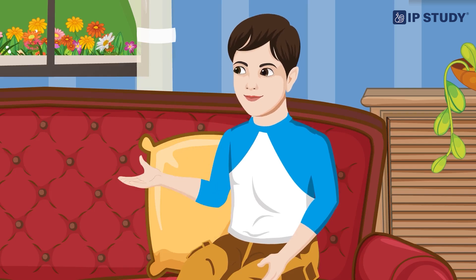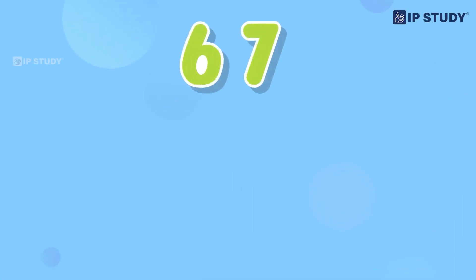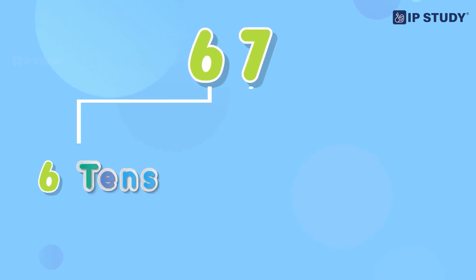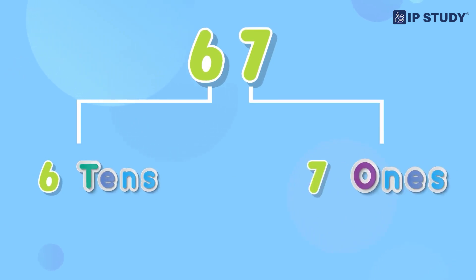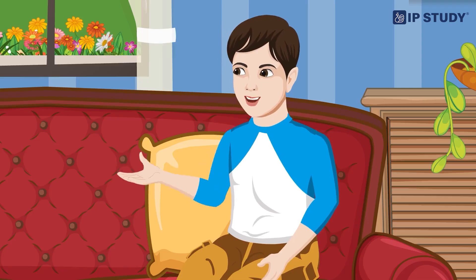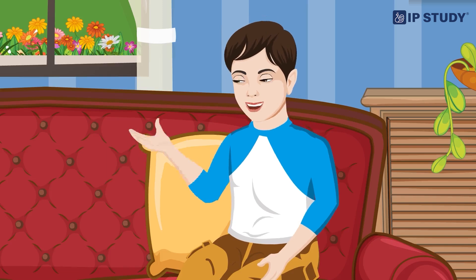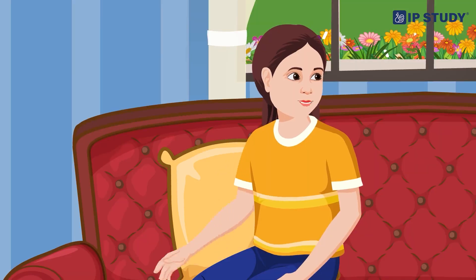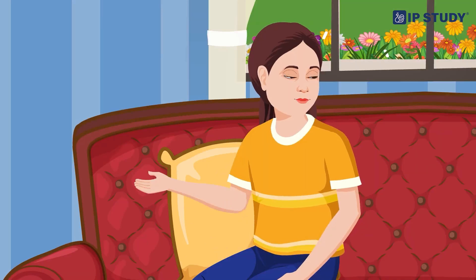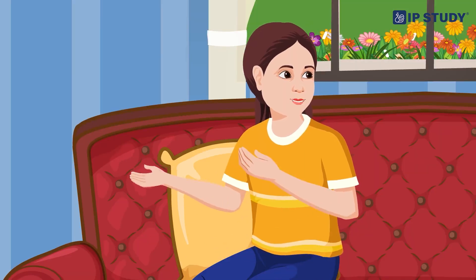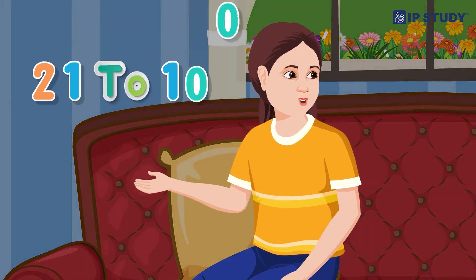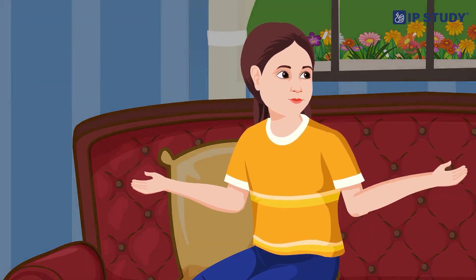Oh, I get it now! So when we have sixty-seven, it means there are six tens and seven ones, and we write it as sixty-seven. Right! Exactly. Do you know that we have special names for numbers from twenty-one to one hundred?